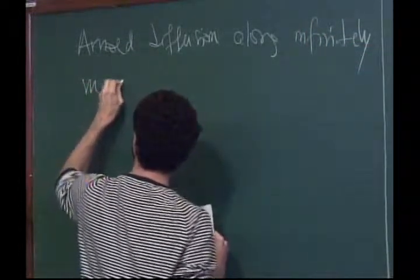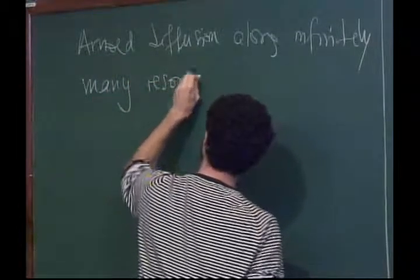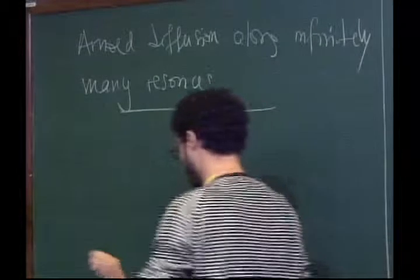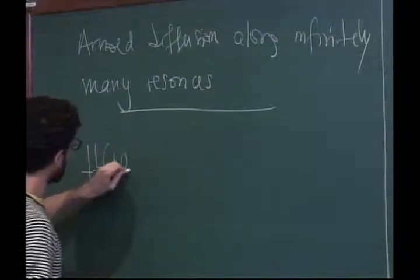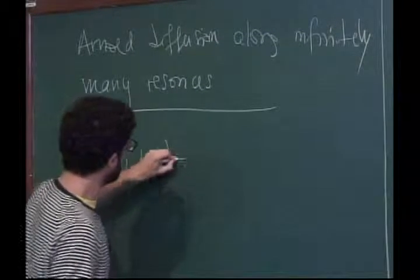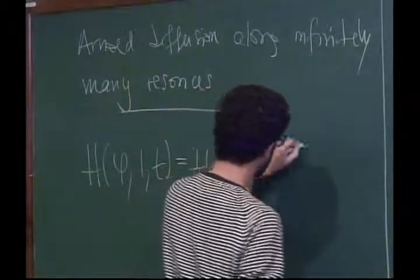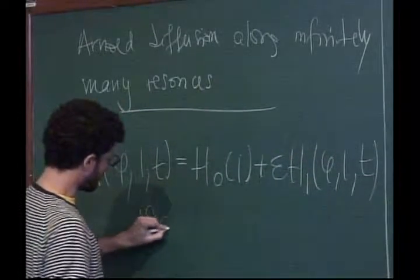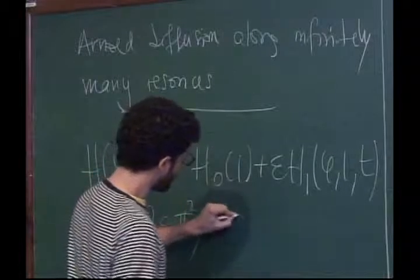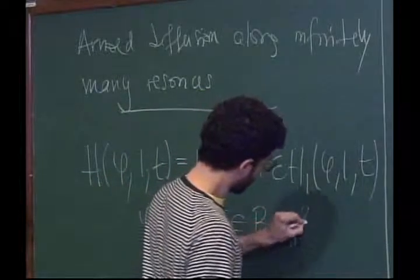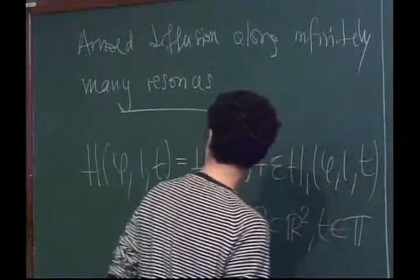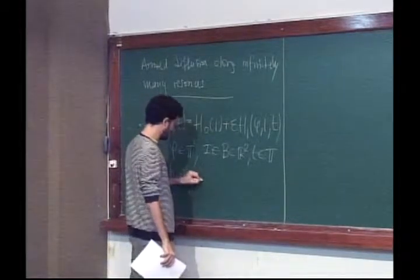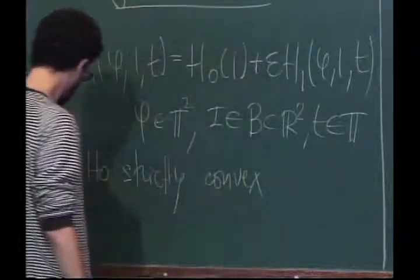So first, let me recall the result which I stated in the second lecture. As always, recall that we are working with H(φ, I, t), which has H0 plus ε·H1(φ, I, t). Here φ belongs to the two-torus, I belongs to some B in R², and t in the torus. As always, I assume that H0 is strictly convex, so the Hessian is positive definite everywhere, and H1 is C^R.